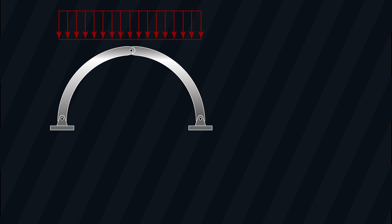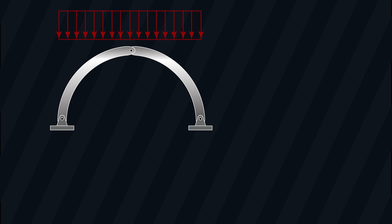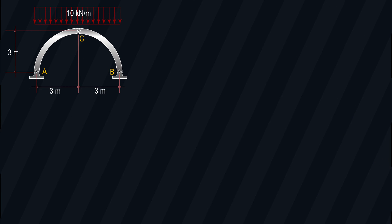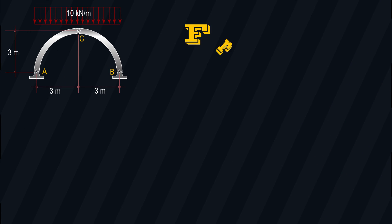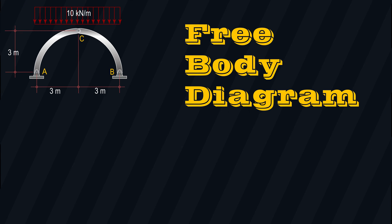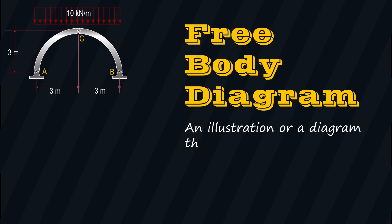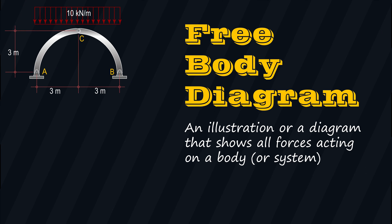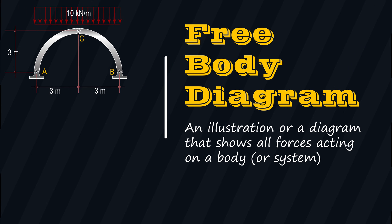Let's consider this example. Suppose we are given a 3-Hinge Arc whose external supports lie on the same elevation, subjected to a uniformly distributed load with a magnitude of 10 kN per meter, and with the following dimensions. What we need to do first is to draw the free body diagram — basically an illustration that shows all the forces acting on a body, including all reactive forces.